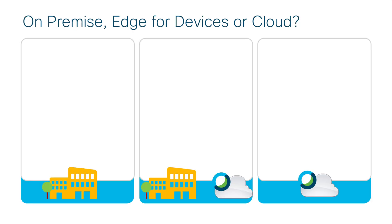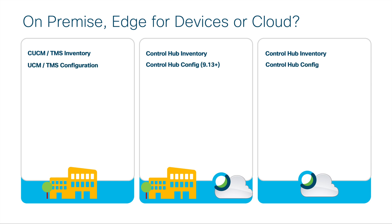So what features are supported where? On the left is on-prem, on the right is cloud, and in the middle is hybrid. There is Control Hub inventory for both hybrid and cloud registered — that's where we do most of our administration from. On-prem, you're going to have to rely on CUCM or TMS or both to do that inventorying. Likewise, from a configuration management perspective, you can do that from CUCM or TMS on-prem. Control Hub is the place to manage that from a hybrid or cloud-enabled perspective.